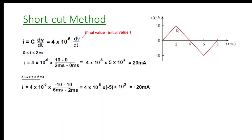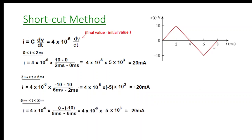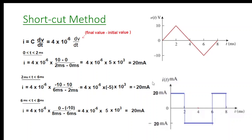For 2 to 6ms: the final voltage value is -10 and the initial value is +10, so dV = -10 - 10 = -20, and dt = 6 - 2ms. Solving gives -20 milliamps. For 6 to 8ms: the final value is 0 and initial is -10, so dV = 0 - (-10) = 10, dt = 8 - 6ms. Solving gives +20 milliamps.